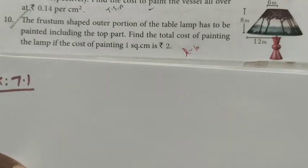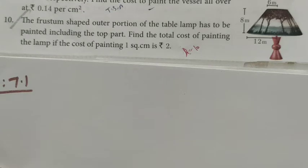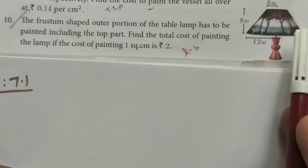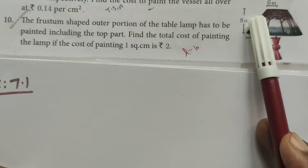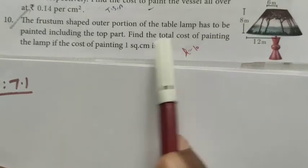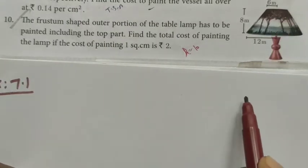Hi students, this is class exercise 7.1, question number 10. The frustum-shaped outer portion of a table lamp has to be painted, including the top part. We need to find the total cost of painting the lamp. This is the frustum-shaped lamp given. If we want to find this portion only, that is the curved surface area, but here we also want to find the top part. So let me draw the radius roughly.